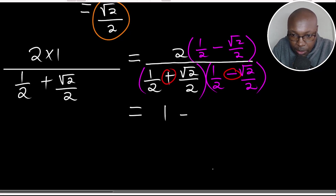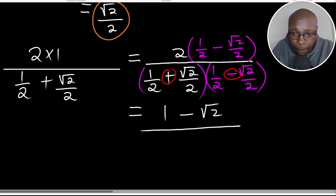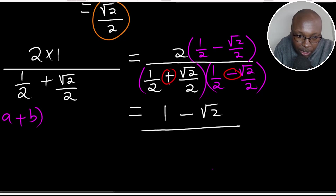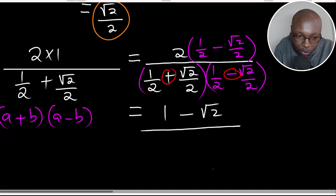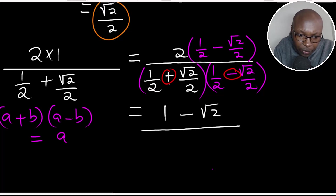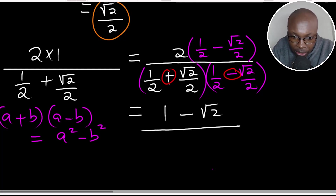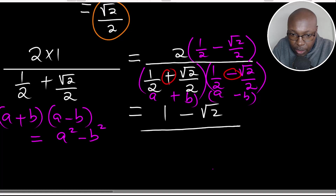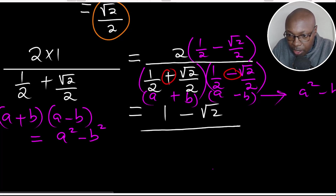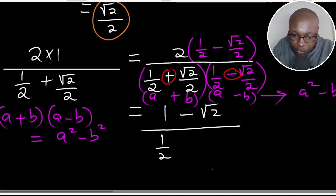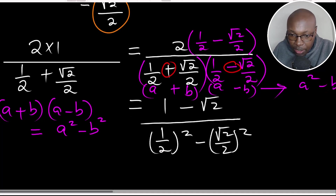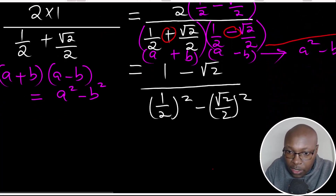For the numerator: 2 times one half is 1, and 2 times root 2 over 2 is root 2, giving (1 minus root 2). For the denominator, it is a difference of two squares. Recall that (a + b)(a − b) = a² − b². Here, a is one half and b is root 2 over 2, so the denominator becomes (one half)² minus (root 2 over 2)², which is one quarter minus one half, giving negative one quarter.